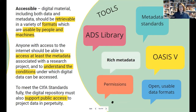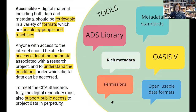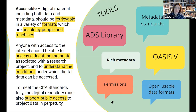For accessibility, the digital material itself — including both data and metadata — needs to be retrievable in a variety of formats usable by both people and machines. Anyone with access to the internet should be able to access at least the metadata associated with a project and understand the conditions under which that data can be accessed. This allows for some datasets to be more closed — if there are embargoes or risks, you can still deposit archives but need to make clear how people can use that data and what steps they might need to take.